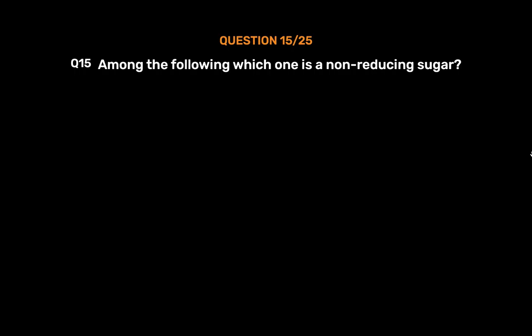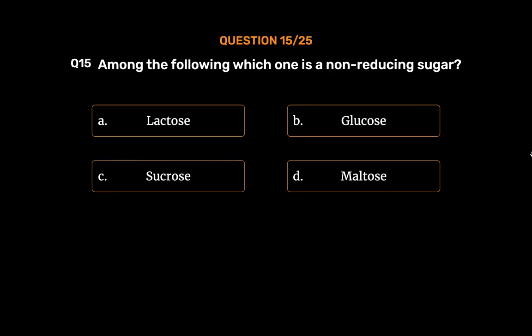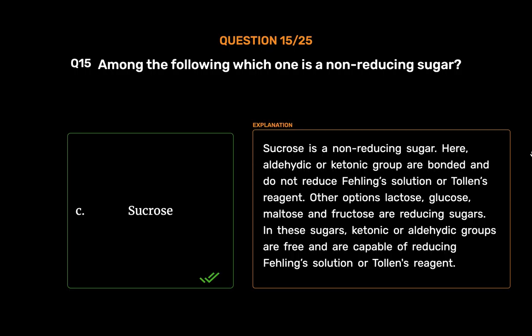Question number 15. Among the following, which one is a non-reducing sugar? Option A, lactose; Option B, glucose; Option C, sucrose; Option D, maltose. The correct answer is Option C, sucrose. Sucrose is a non-reducing sugar — the aldehyde or ketone groups are bonded and do not reduce Fehling's solution or Tollens' reagent. Other options — lactose, glucose, maltose and fructose — are reducing sugars, as their ketonic or aldehyde groups are free.